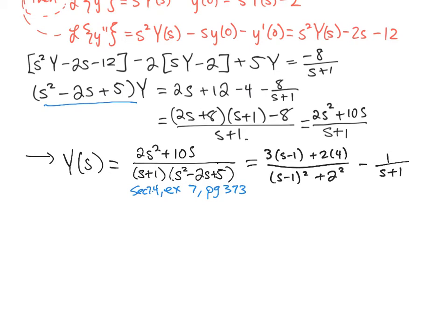Why is that quadratic denominator written so strangely? It exactly equals s squared minus 2s plus 5, but it's simpler when it looks like something squared plus something squared. You figure out from the s terms what that looks like — it's half the coefficient, so s minus 1 squared. Multiplying that out gives s squared minus 2s plus 1, and to get to plus 5 you add plus 4, then take the square root to get the 2 upstairs. It's essentially completing the square — high school algebra, but a standard trick.